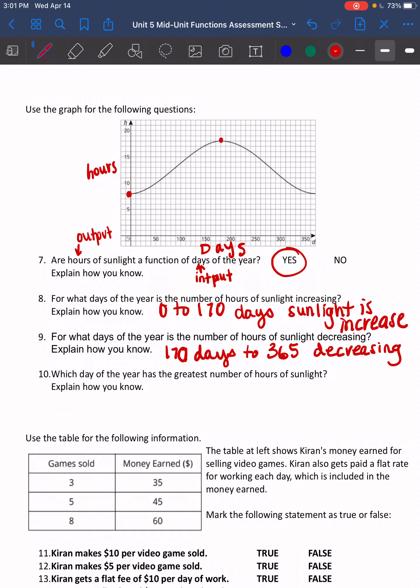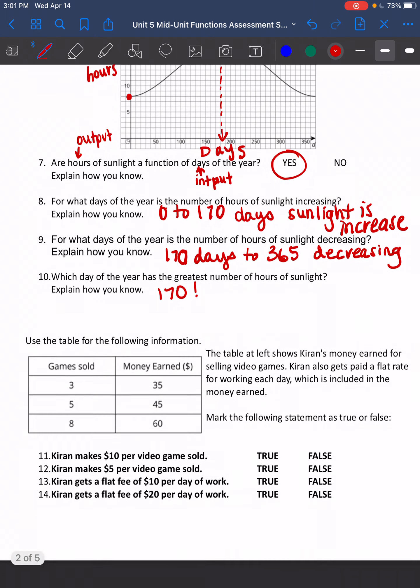The day that has the greatest number of hours of sunlight would be the day where we have the most sunlight. That's the top of that graph. That would probably be at around 170. I have to look about here, I go down here, and that would be about 170 on my x-axis. And that has about 18 hours of light.